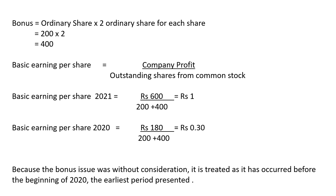The Basic EPS formula is: company profit divided by outstanding shares from ordinary stock. For 2021: profit is Rs. 600, divided by outstanding shares of 200 plus bonus shares of 400, giving total shares of 600. So Basic EPS 2021 = 600 ÷ 600 = Rs. 1.